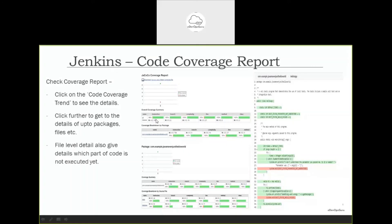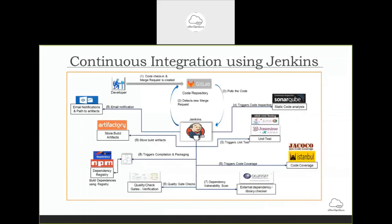So this is how you can tell your developers: this piece of code has not been executed, write a unit test case for this piece so that your code coverage can increase. This is the overall CI — not CD — only the CI part. These are the different perspectives of reports: how we can see from the top level, then from the file level, then at the function level.